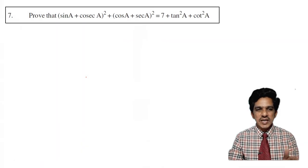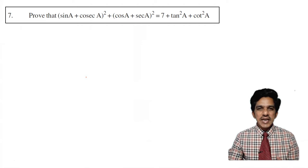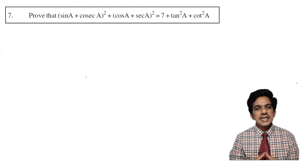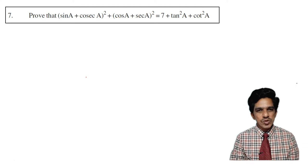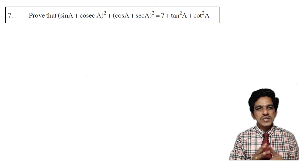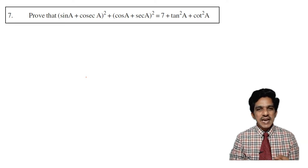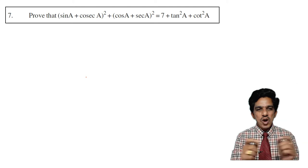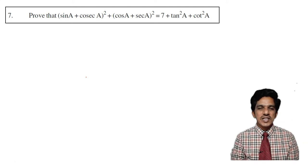Let us move to the next problem. Question number 7: Prove that sin a plus cosecant a whole square plus cos a plus secant a whole square is equal to 7 plus tan square a plus cot square a. This problem involves all 6 trigonometric ratios: sin, cos, secant, cosecant, tan, and cot.